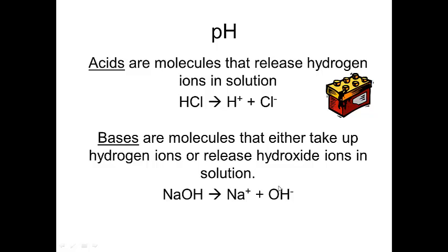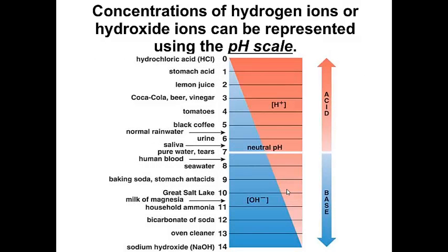And we can look at our concentration of hydrogen ions and hydroxide ions on a pH scale. So the more hydrogen ions are in a solution, if there's more hydrogen ions than hydroxide ions, you are an acid.